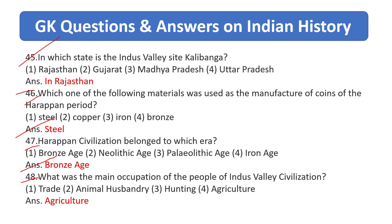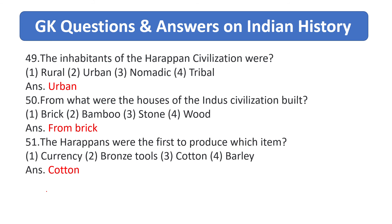What was the main occupation of the people of Indus Valley civilization? Answer is agriculture. The inhabitants of Harappan civilization were answer is urban. From what were the houses of Indus civilization built? Answer is from brick. The Harappans were the first to produce which item? Answer is cotton.